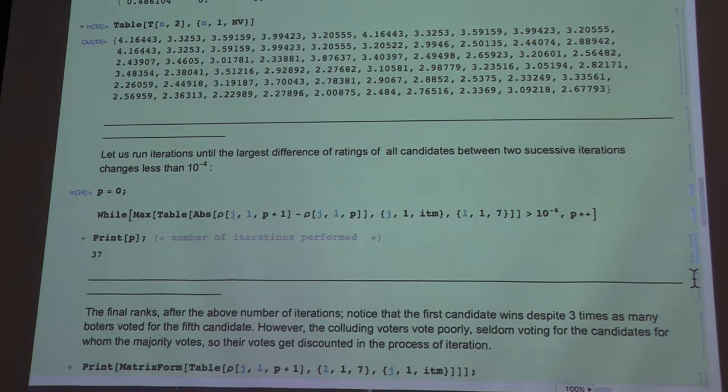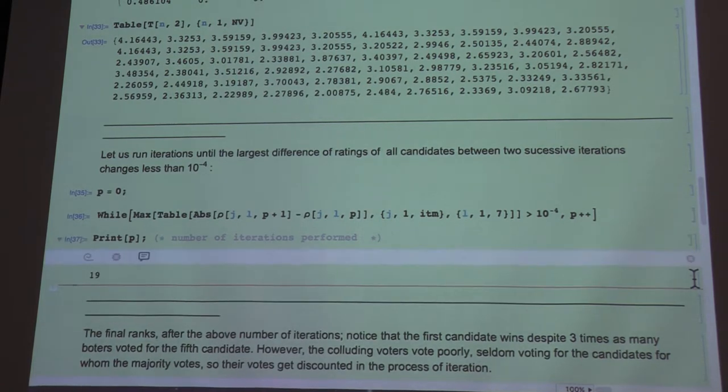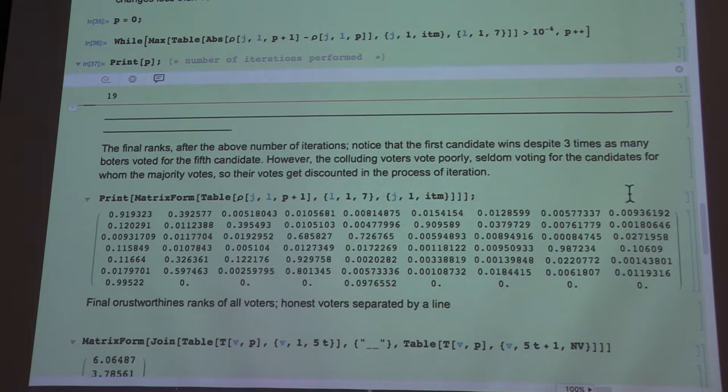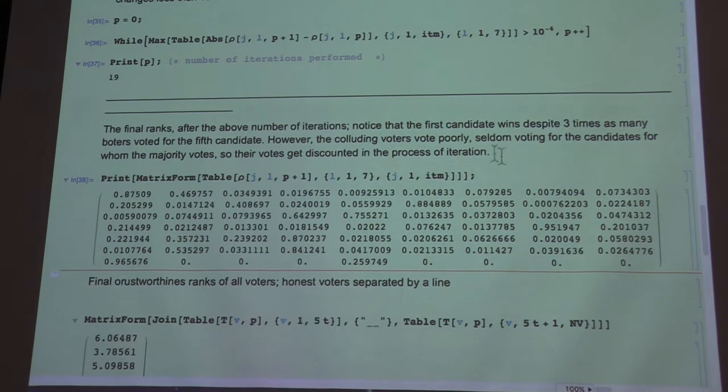So if we do that, you can see in 19 rounds of iteration, the ranks computed in the 18th and 19th round of iteration differ for less than 10 to the minus four. And let's see now what the final ranks are.